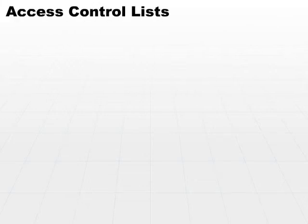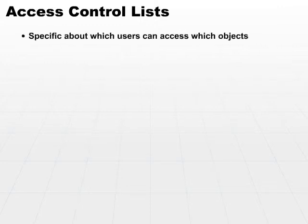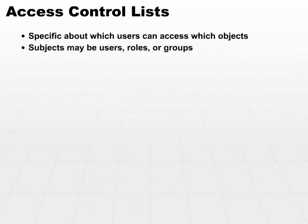Fairly common in many access control techniques is the concept of an access control list. An access control list is very specific, which says which users can access which objects. The users or subjects can either be users, or it can be a role, or it can be a group.